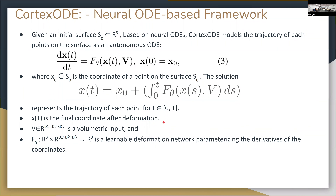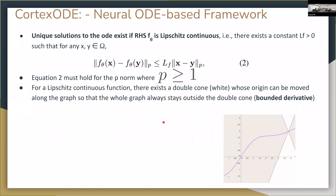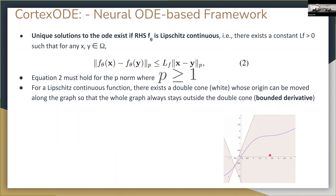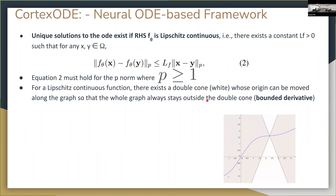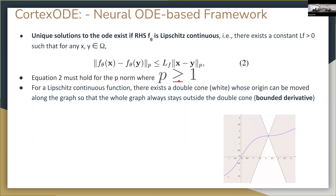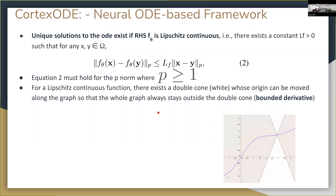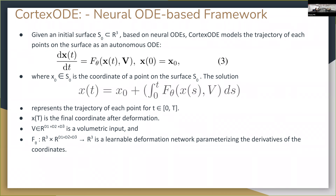It doesn't have to be monotonically increasing — the derivative just has to be bounded by a cone, so the magnitude of the derivative has to be below a certain value. It's similar to what you need with Kaplan models. It's also defined for the p-norm, so there are probably even more complicated ways of looking at this, but basically this is one interpretation of the Lipschitz condition.